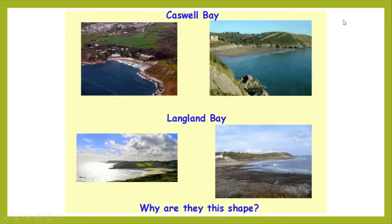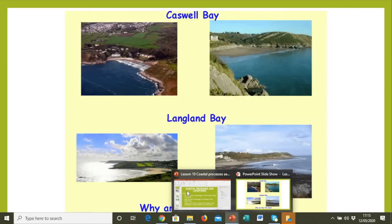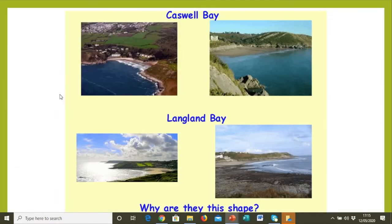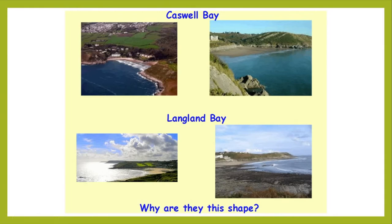How do these erosion processes shape our coastline? Here are some local images — Caswell Bay and Langland Bay. In between the bays there's land that still sticks out — a sticky-out bit and a sticky-in bit. These alternating features are called headlands for the bits that stick out, and bays for the bits that go in. These are created because our coastline isn't all the same rock type. You get areas of softer rock and areas of harder rock — that's called a discordant coastline.